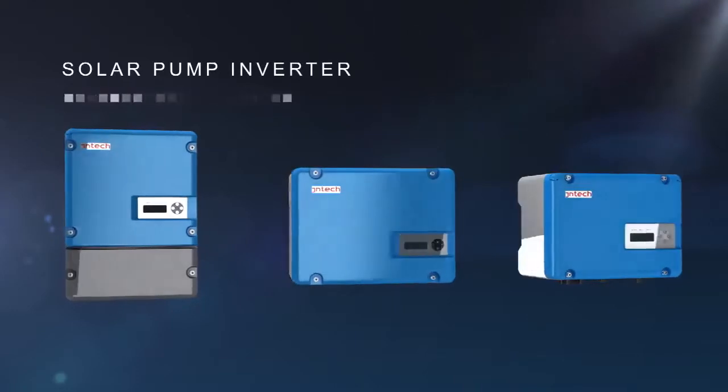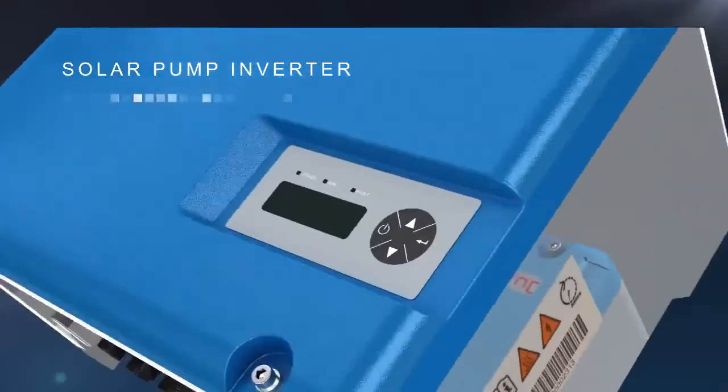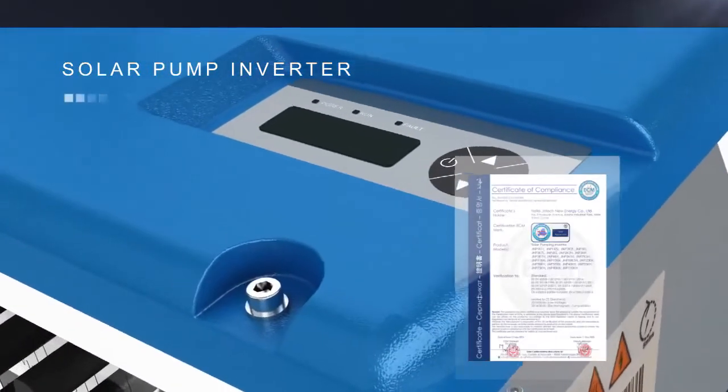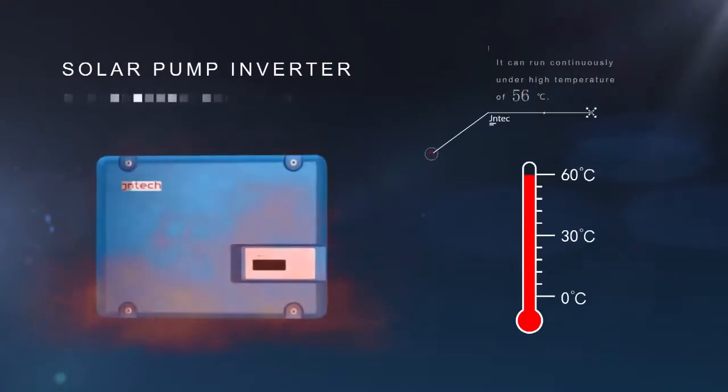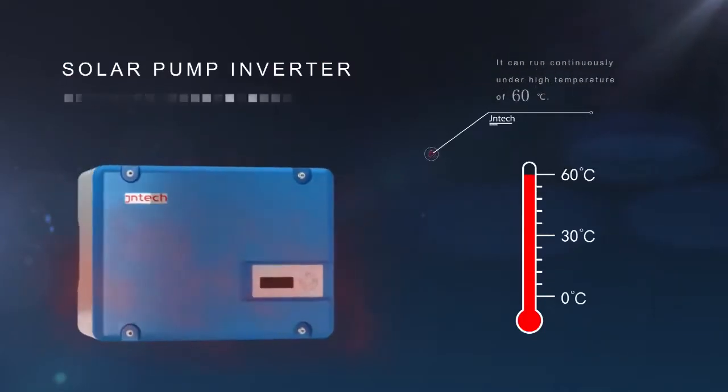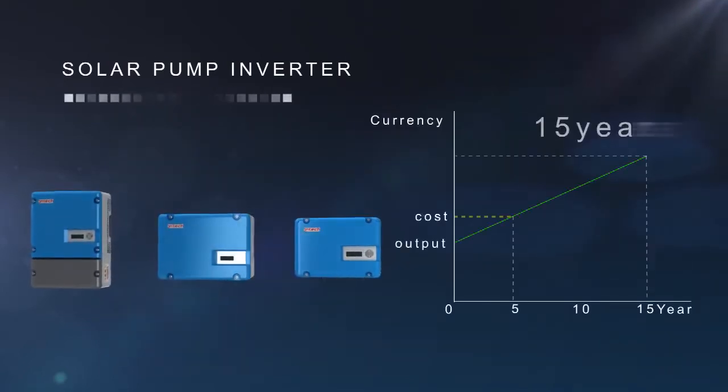Solar pump inverter is the key equipment of solar pump system. The appearance adopts German industrial design with CE certificate. It can run continuously under high temperature of 60 degrees Celsius, satisfy various climatic conditions, and service life can be up to 15 years.